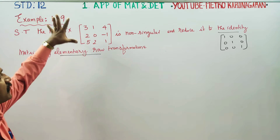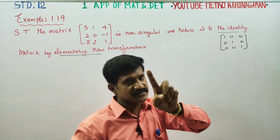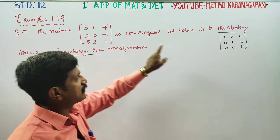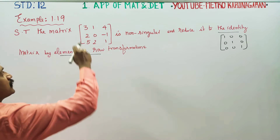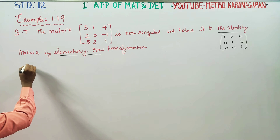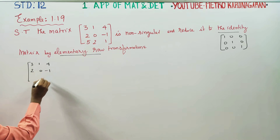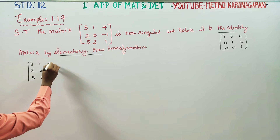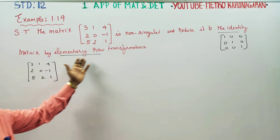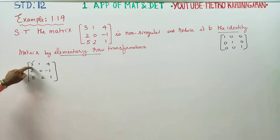So our target is to reduce this non-singular matrix to the identity matrix. The first stage is to make the first pivot entry equal to 1. In the first row, the entry is 3, and we need to make it 1. In the second stage, the second diagonal entry should become 1, and so on. The matrix is 3, 1, 4; 2, 0, minus 1; 5, 2, 1. We perform elementary row transformations to make 1 in the pivot position.